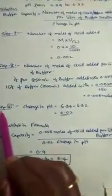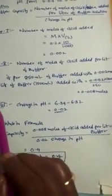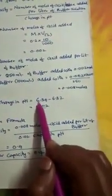So we have completely calculated about the numerator part. Now coming to the denominator part where we have to concentrate on the change in pH. So change in pH is 6.34 minus 6.32 that is 0.02.